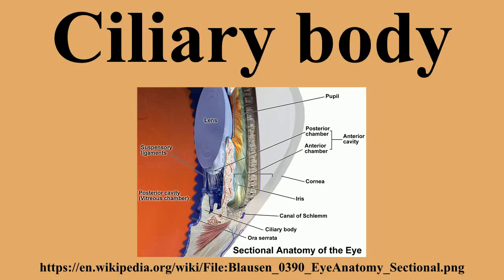The ciliary body has three functions: accommodation, aqueous humor production and resorption, and maintenance of the lens zonules for the purpose of anchoring the lens in place. Accommodation essentially means that when the ciliary muscle contracts, the lens becomes more convex, generally improving the focus for closer objects.